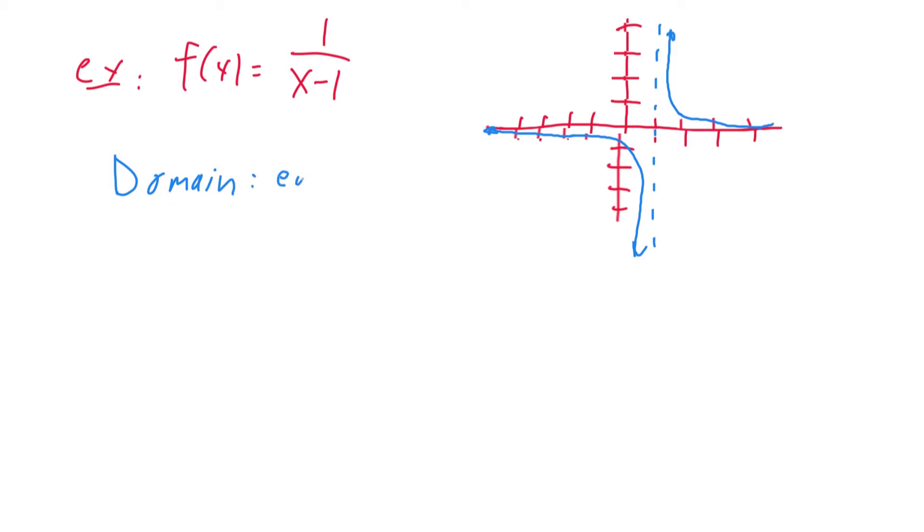The domain—the issue is clearly at one. So I'll say everything except x equals one. Another way to write this is minus infinity to one, don't include one, union one to infinity.